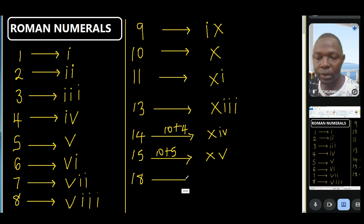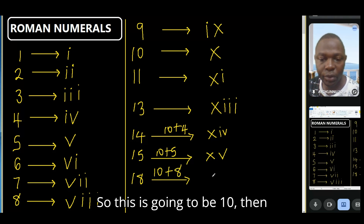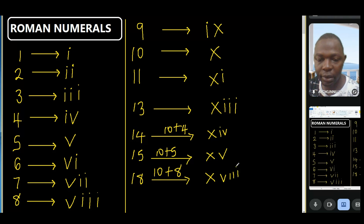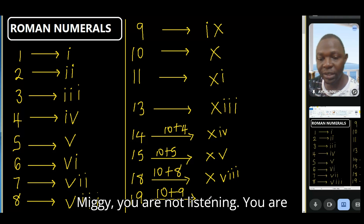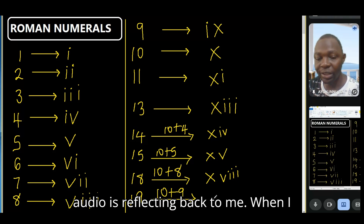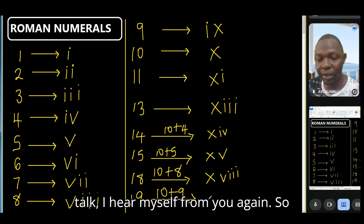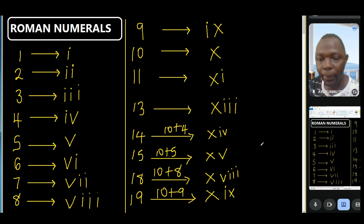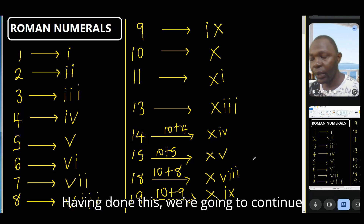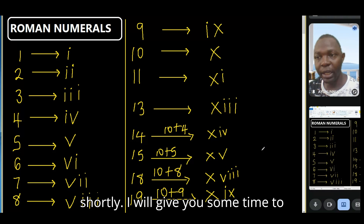How about 18? Eighteen is 10 plus 8, so that's X then VIII. How about 19? Migi, you're not listening — you're tampering with your audio and I can hear myself echoing. Nineteen is 10 plus 9, so that's X and IX.